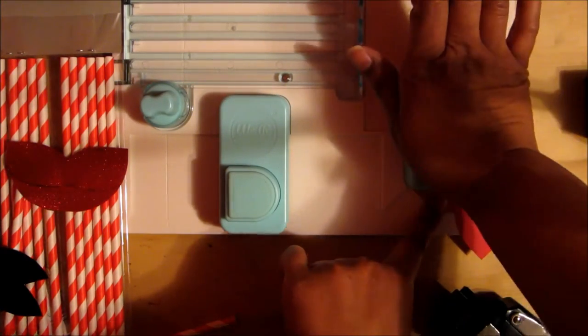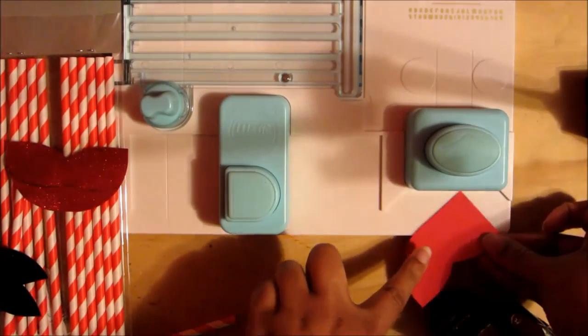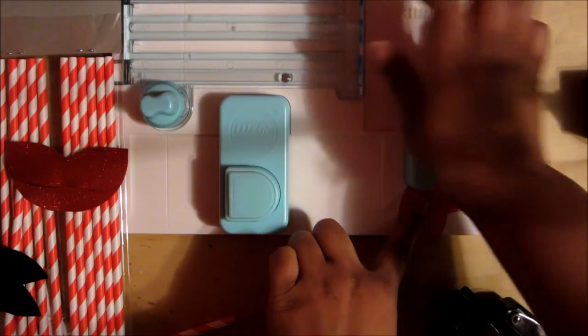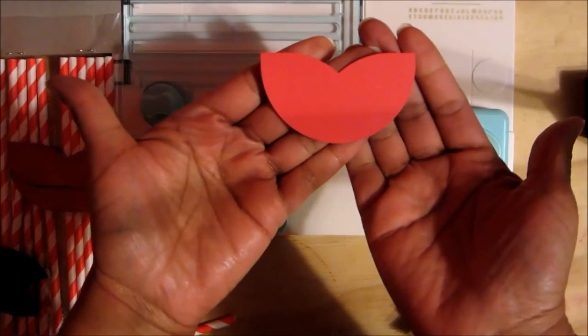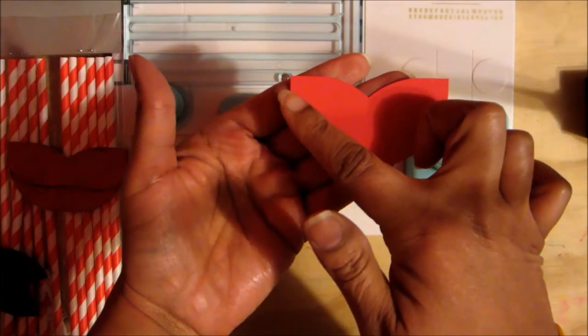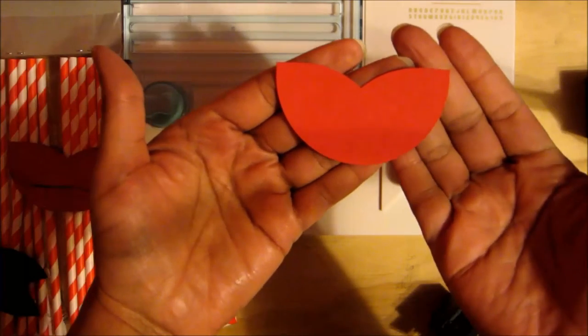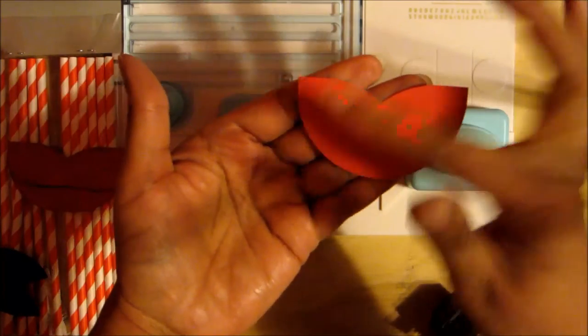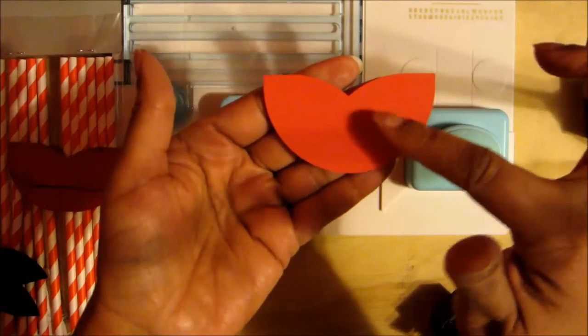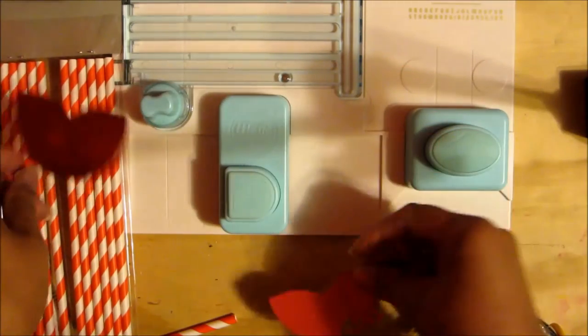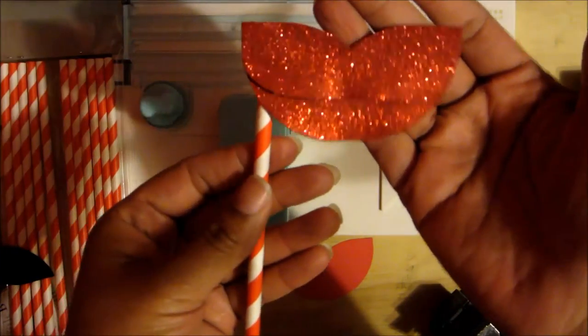Turn it to the other side and give it another punch. Here's your lips. Now if you want to give it an upper lip and a bottom lip, you can create two and then just cut it and put some dimensional foam underneath like I did with my example.